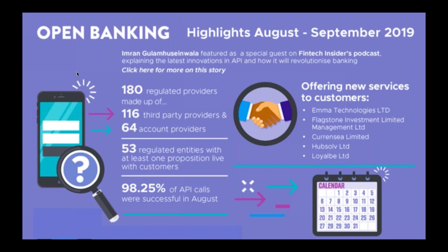The very big API users — the large regulated entities — are likely to be the big tech giants: the Apples, Amazons, Facebooks, and Googles, for their various wallets and financial products. We think that's going to really be a much bigger thing next year.